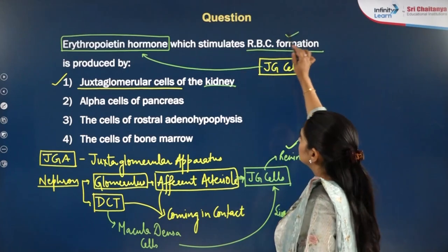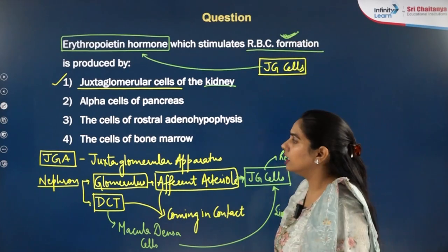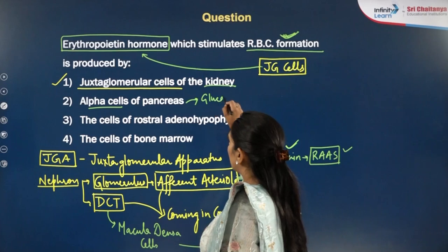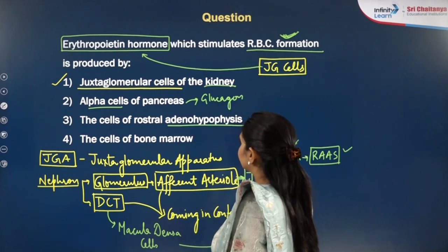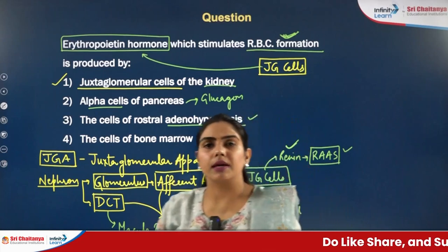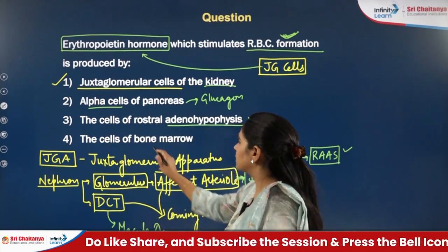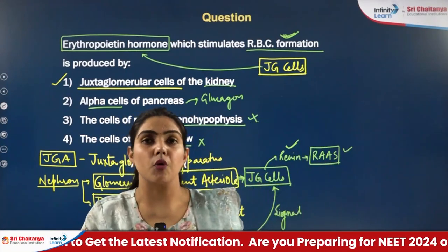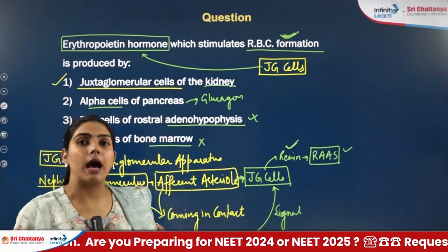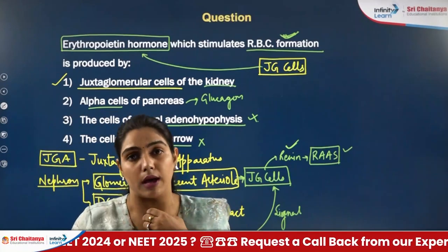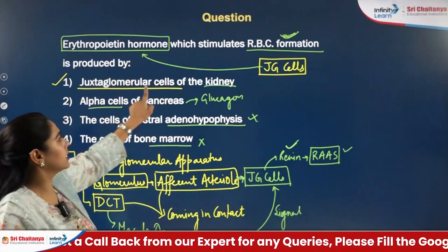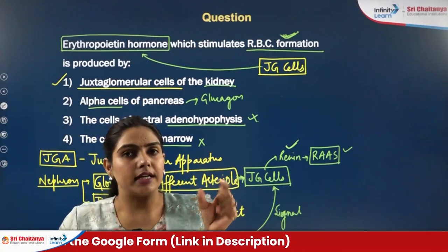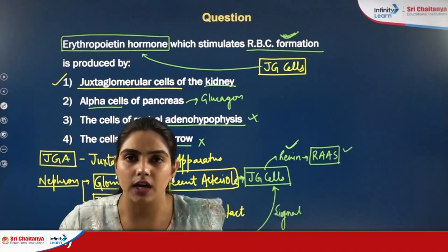The function of erythropoietin is to stimulate RBC production in the body. Alpha cells of the pancreas secrete glucagon, not erythropoietin. Adenohypophysis and bone marrow also do not secrete erythropoietin — the bone marrow is where RBCs are formed, but the hormone erythropoietin is secreted by the JG cells of the kidney. You have to remember: erythropoietin is produced by JG cells of the kidney.